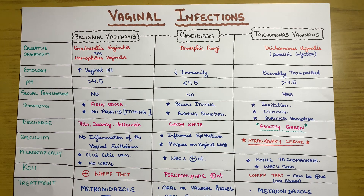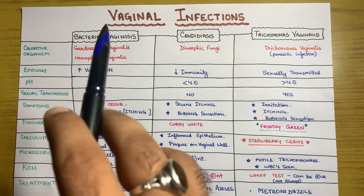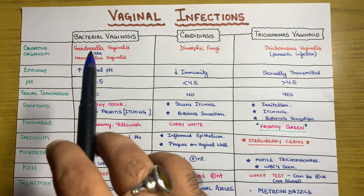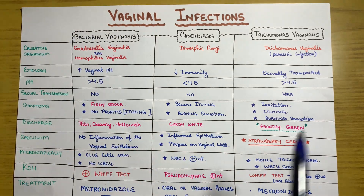Hello everyone. In this video I'm going to tell you about vaginal infections — most importantly these three: bacterial vaginosis, candidiasis, and trichomonas vaginalis. We will start with bacterial vaginosis; I've tried to make a chart so that you can learn it quite easily.